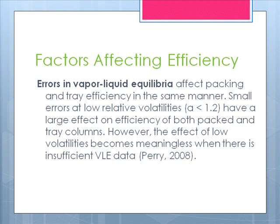Finally, errors in liquid-vapor equilibria affect packing and tray efficiency in the same manner. Small errors at low relative volatilities, or alpha below 1.2, have a large effect on the efficiency of both packed and tray columns. However, the effect of low volatilities becomes meaningless when there is insufficient VLE data.